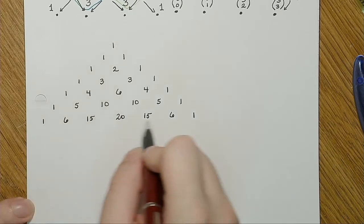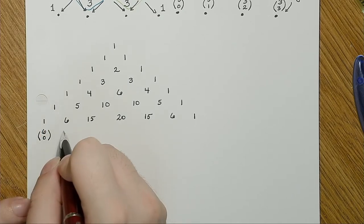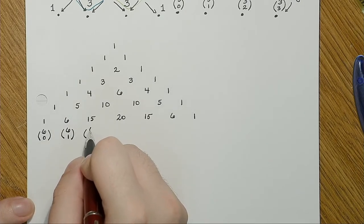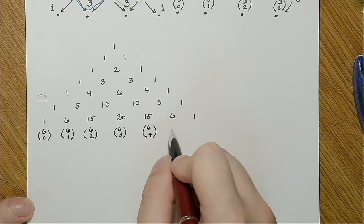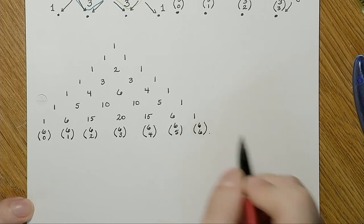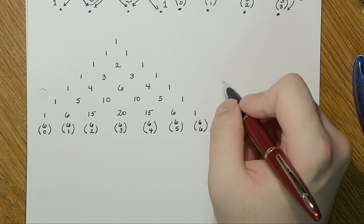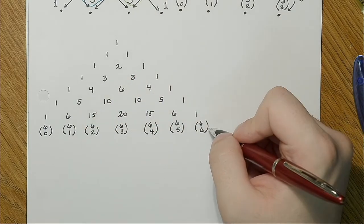So now for picking from six objects: six choose 0 is 1, six choose 1 is 6, six choose 2 is 15, six choose 3 is 20, six choose 4 is 15, six choose 5 is 5, and six choose 6 is 1. Now you have a quick way of constructing a small table of values that you can use to quickly calculate your combinations.